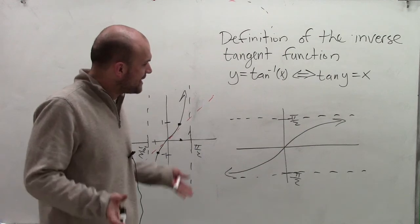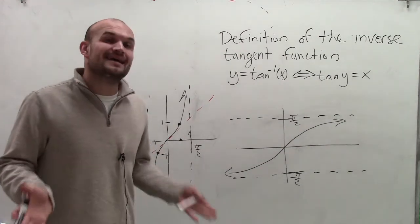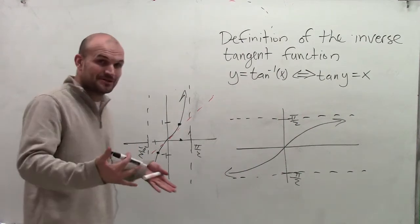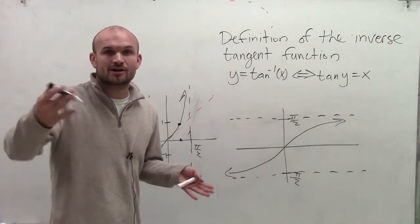So again, by graphing this, you can see there is going to be restrictions on our domain. And our, no, I'm sorry, there's not going to be restrictions on our domain. There's going to be restrictions on our range.